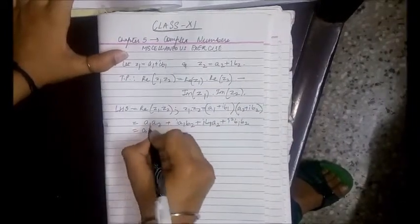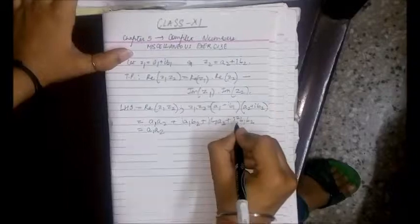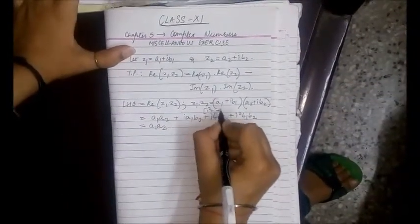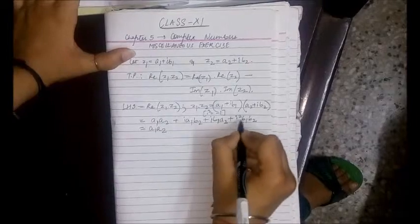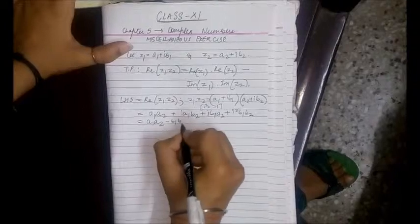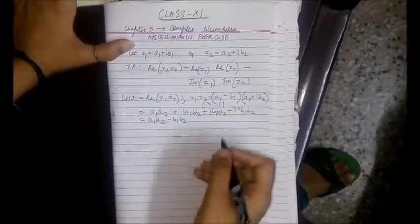So this is A1 into A2, and we know that iota square is minus 1. So iota square, we will put the value here, minus 1. This gives us minus B1 B2. In this step, we are also collecting the like terms together.